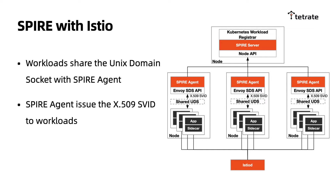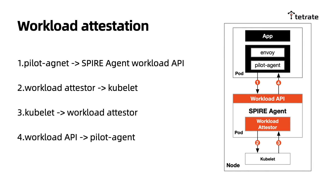This diagram shows how the workloads interact with Spire in Istio. The workload shares a Unix domain socket with the Spire agent, and the Spire agent issues the X.509 SVID to workloads.